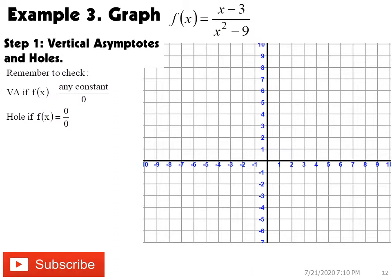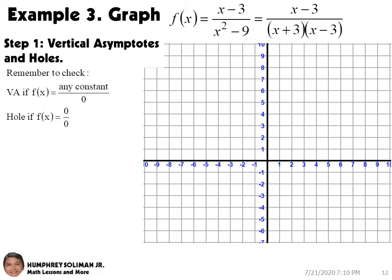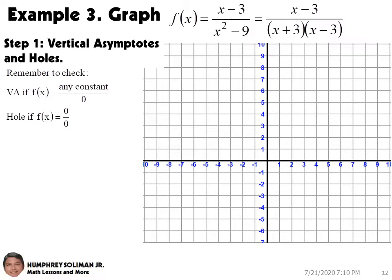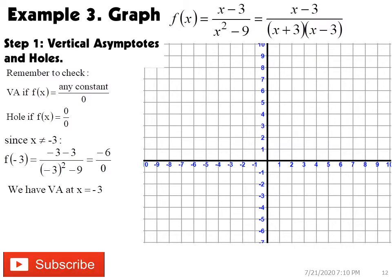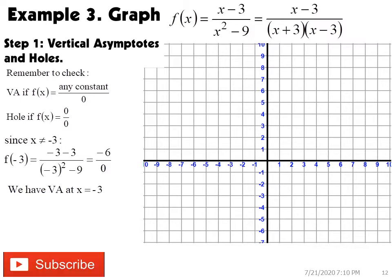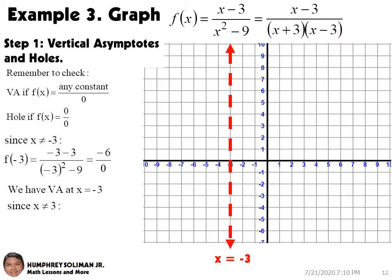Let's have another example. We are asked to graph this rational function. Before we proceed, we can rewrite the denominator in two-factor form. This shows us two values of x that we cannot have. Since x cannot be equal to negative 3, substituting it gives us negative 6 over 0, so we have a vertical asymptote at x equals negative 3. Since x cannot be equal to 3, substituting it gives us 0 over 0, which means we have a hole in the graph at x equals 3.